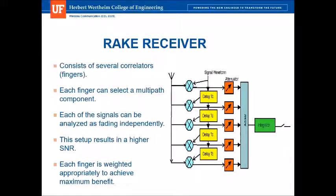So what exactly is a rake receiver? A rake receiver consists of several correlators, each of which is called a finger. Each finger is used to correlate or select one multipath component. Once the signal is received by the antenna, it is delayed by a symbol duration, and each of the signals is analyzed independently. The fading of each signal is analyzed independently, and this setup results in a higher signal-to-noise ratio than a normal receiver setup. Sometimes each finger must be weighted appropriately to achieve maximum benefit.